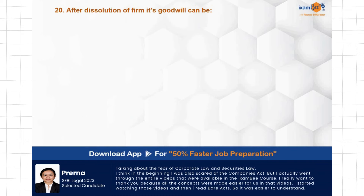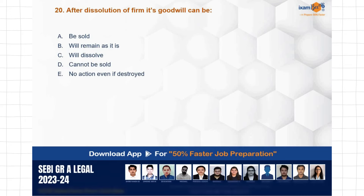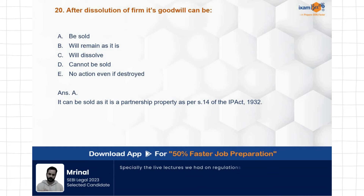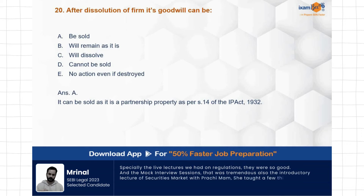Question: After dissolution of a firm, its goodwill can be sold, will remain as it is, will dissolve, cannot be sold, or no action even if it is destroyed. The correct answer is A — after dissolution of a firm, its goodwill can be sold. Section 14 discusses partnership property and makes it clear that goodwill is also a partnership property, and therefore it can be sold.